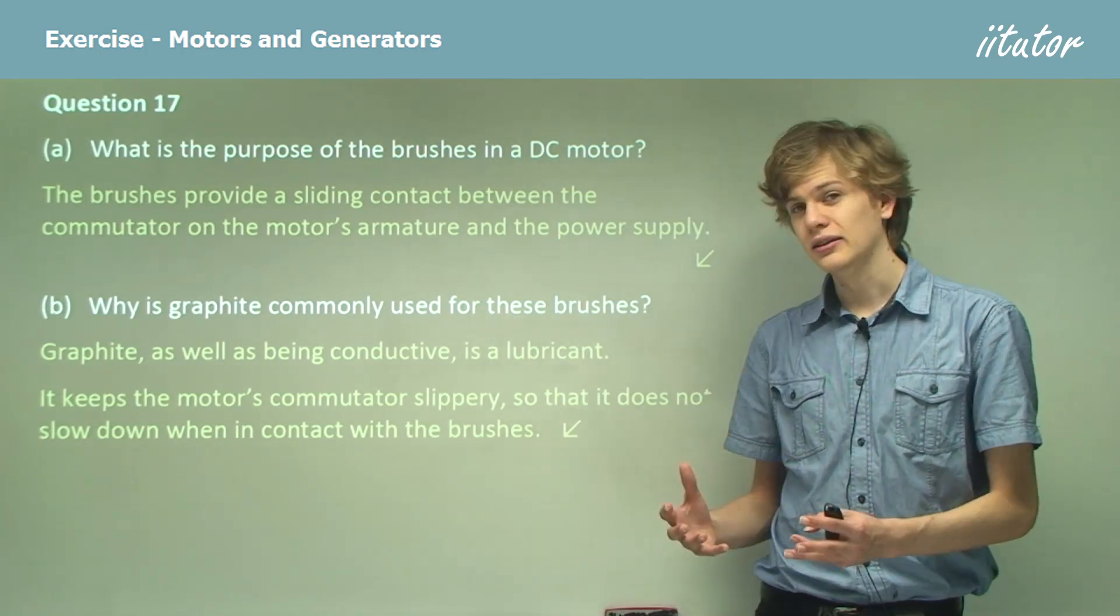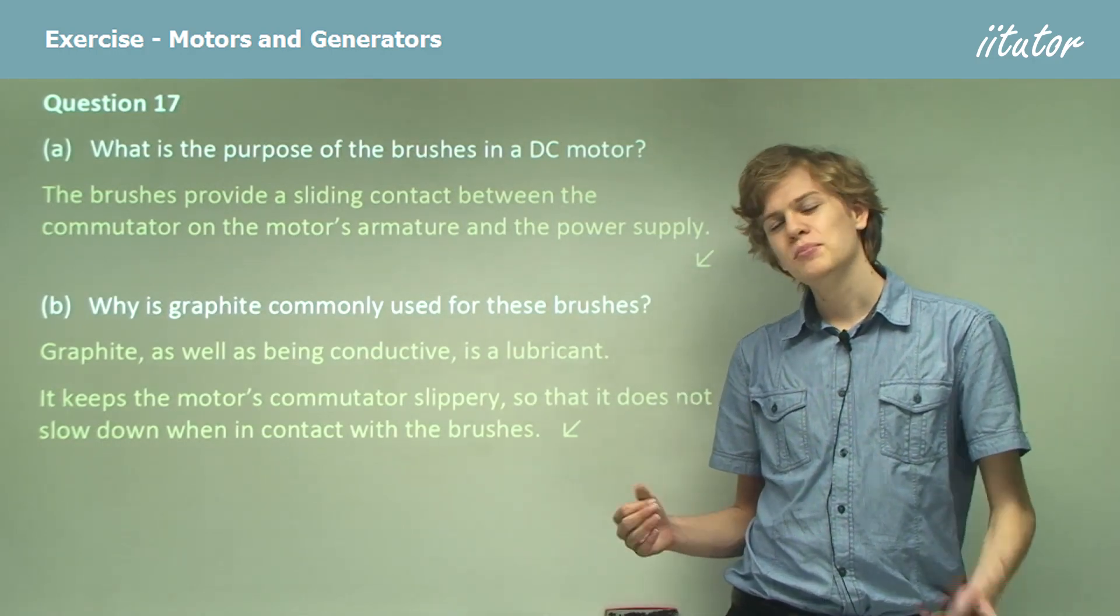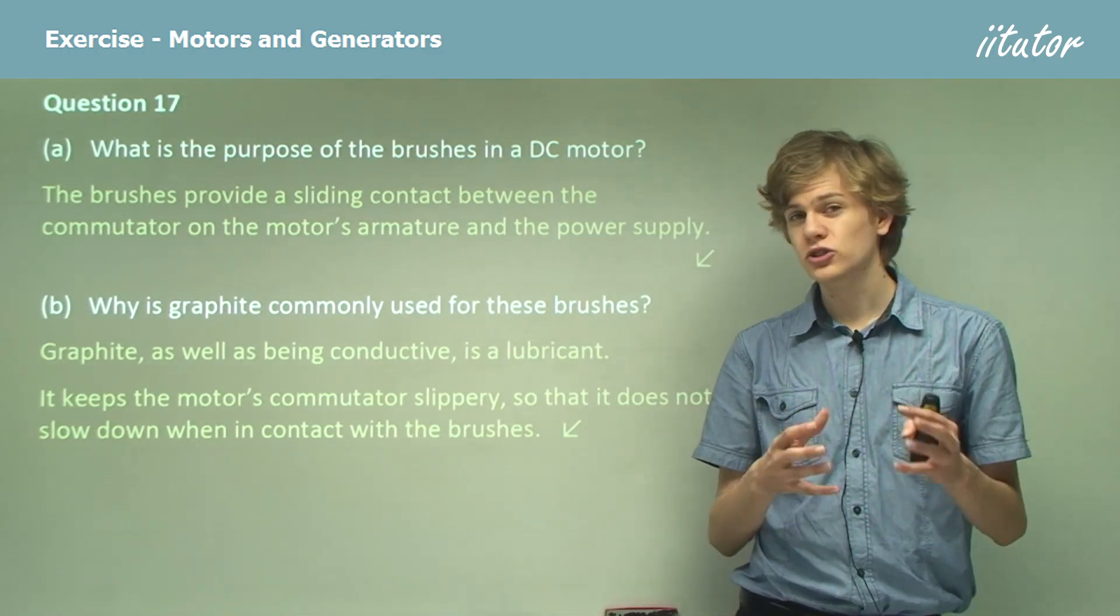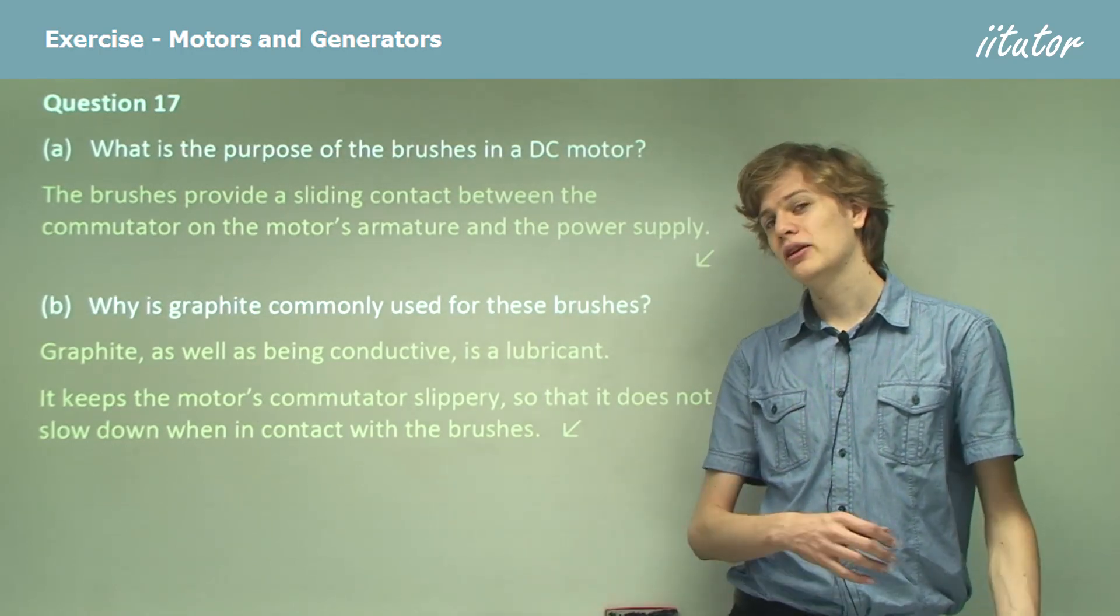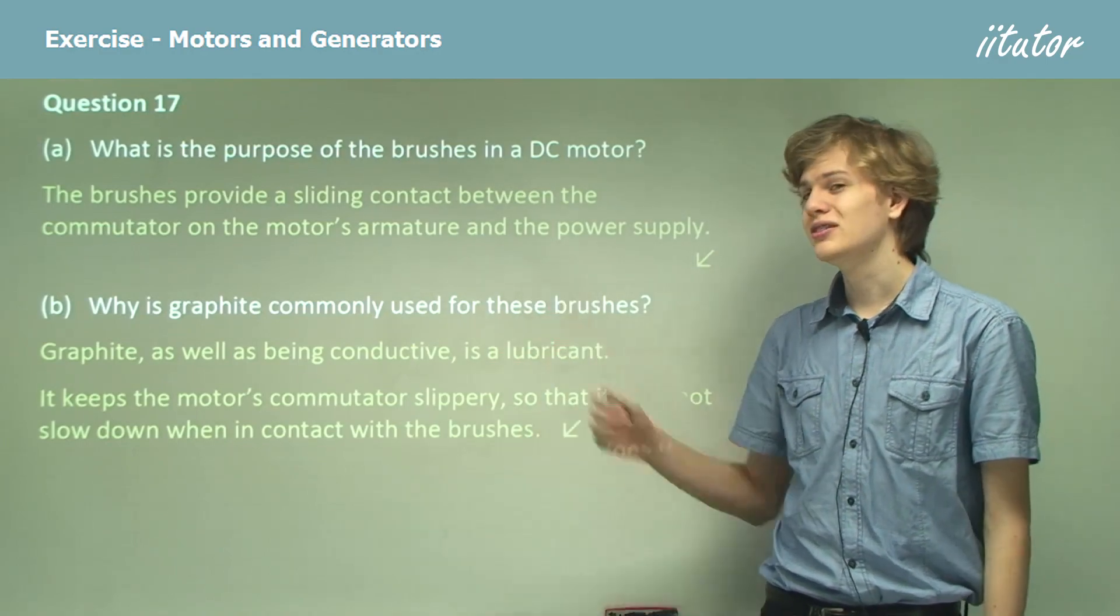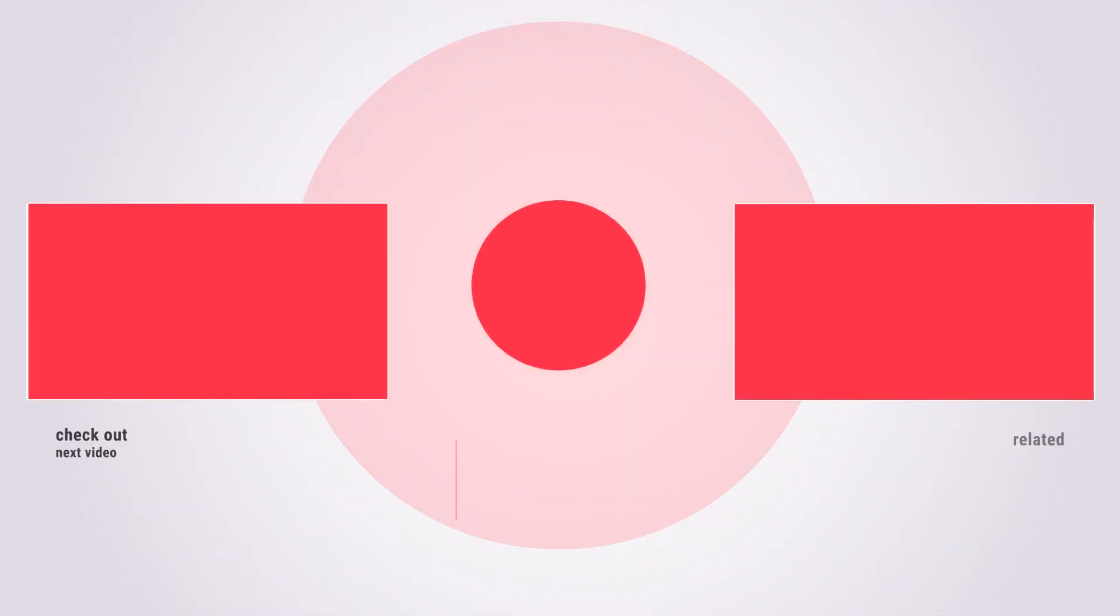So the lubricating ability of graphite is why we use it for brushes. Because it slips along the commutator so easily, it makes it a very good sliding contact and allows the commutator to spin very, very fast, even when the brush is in contact with it. I will see you in the next video.